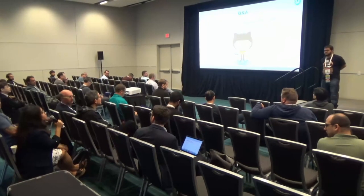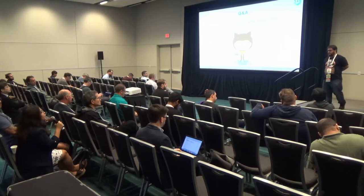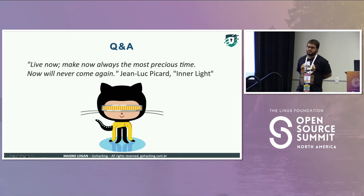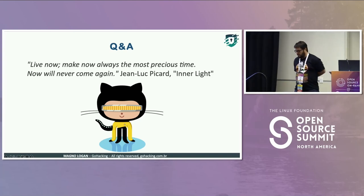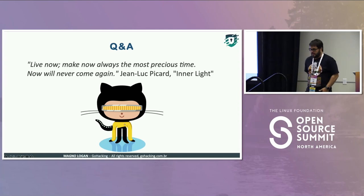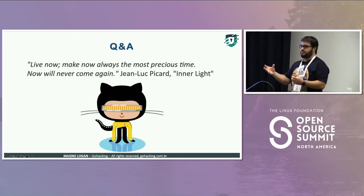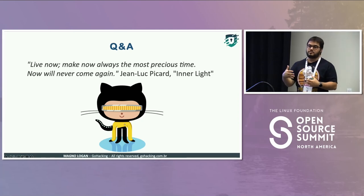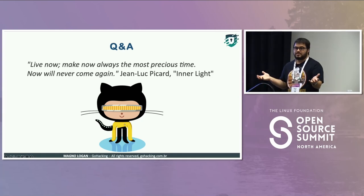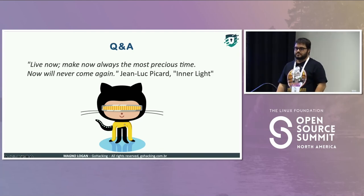Q: You mentioned threat detection using audit logs. Is there any analytics integrated as part of Kubernetes, or how are we doing that? A: As far as I know, there's nothing native from Kubernetes to help with threat detection. You have to implement cloud-native or open-source tools. For runtime security, there is Falco from the CNCF, which has rules to detect malicious behavior. It also uses eBPF and Kubernetes audit logs, and you can create your own rules in addition to the defaults. Natively, there's nothing there — that's why a lot of companies are investing in threat detection for Kubernetes environments.